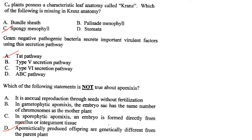Which statement is not true about apomixis? It is asexual reproduction through seeds without fertilization — correct. In gametophytic apomixis the embryo sac has the same chromosome number as the mother plant — correct. In sporophytic apomixis an embryo is formed from nucellar cells or integument tissue — correct. Apomictically produced offspring are genetically different from the parent — this is wrong. Answer is option D.